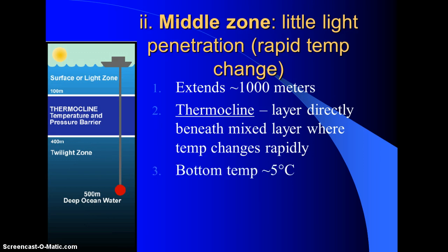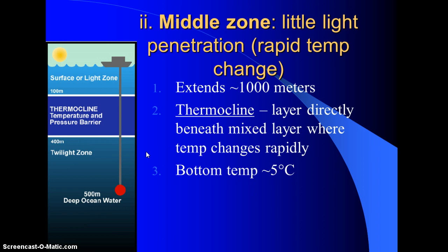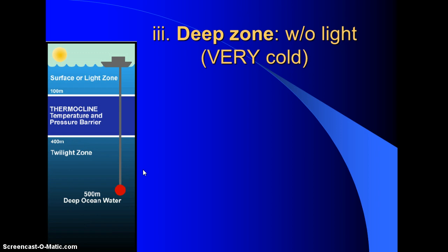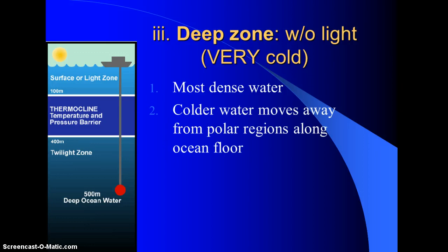The bottom of the thermocline is roughly — and that's an 'about' sign, not a negative — about 5 degrees Celsius. That temperature continues all the way through the deep zone. The deep zone is where the abyss is: zero light penetration, very cold, and the most dense water, therefore it sits at the bottom. Colder water moves away from the polar region and slides across the ocean floor.